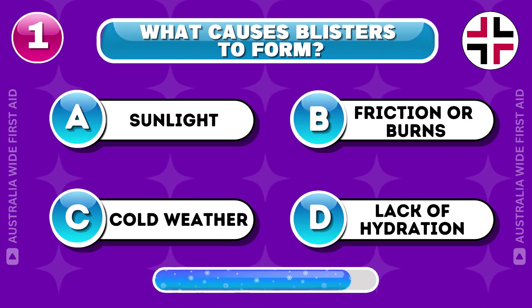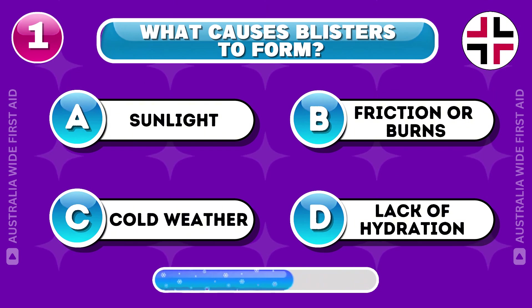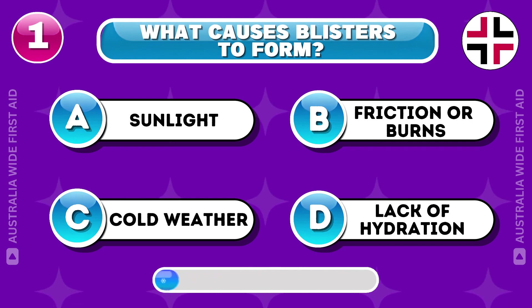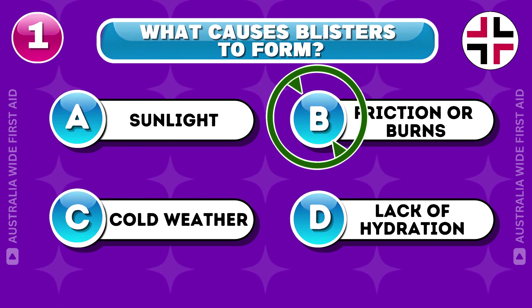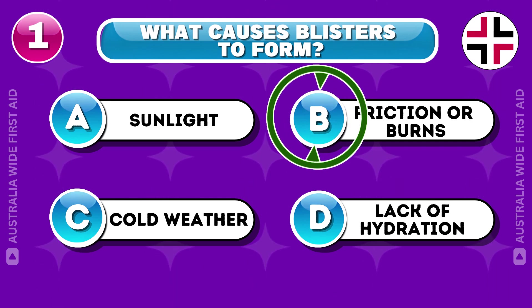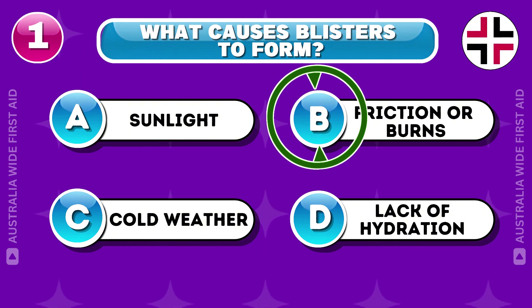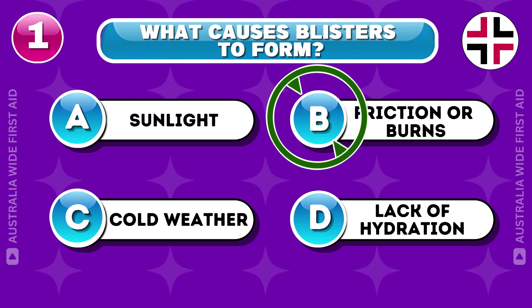What causes blisters to form? Correct answer: B. Blisters form due to friction, burns, or other injuries that cause fluid to accumulate under the skin to protect the tissue.